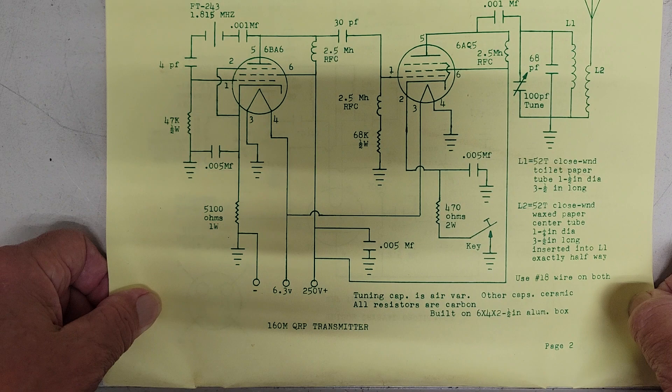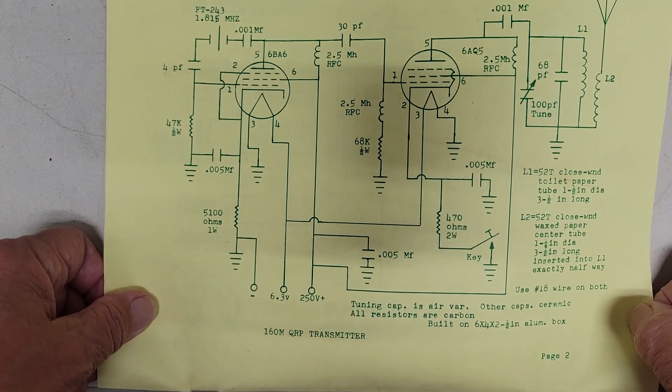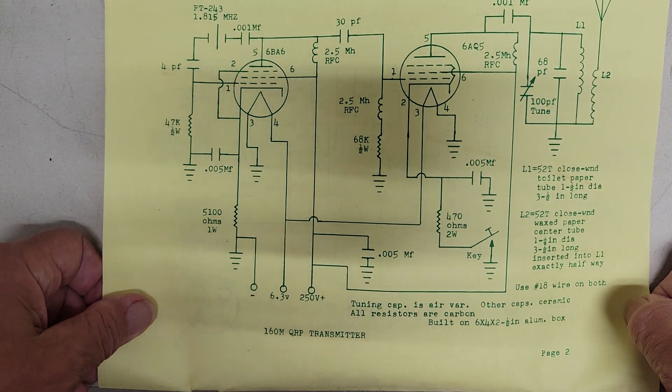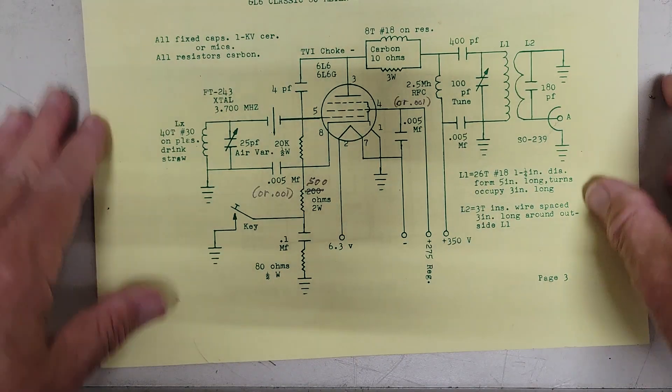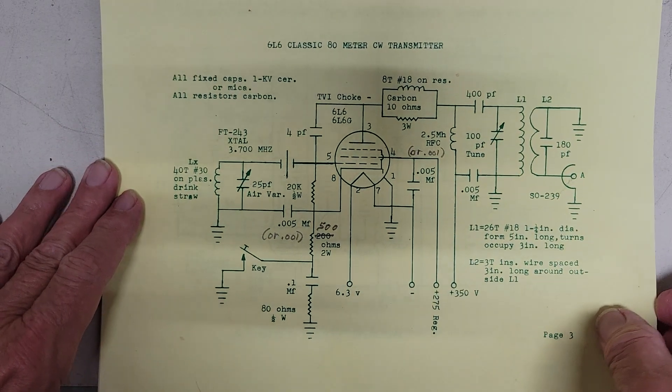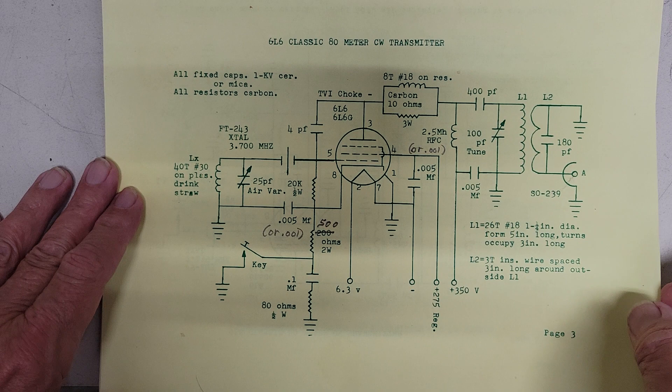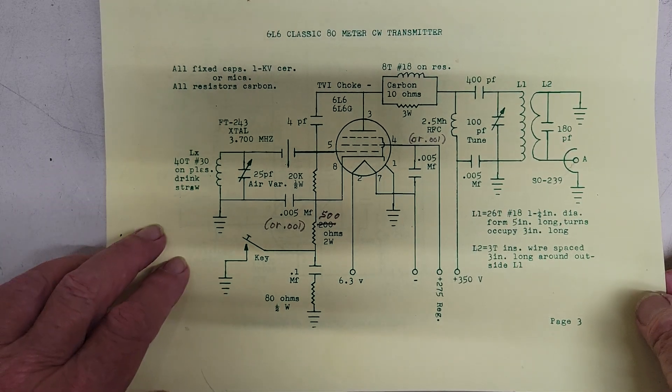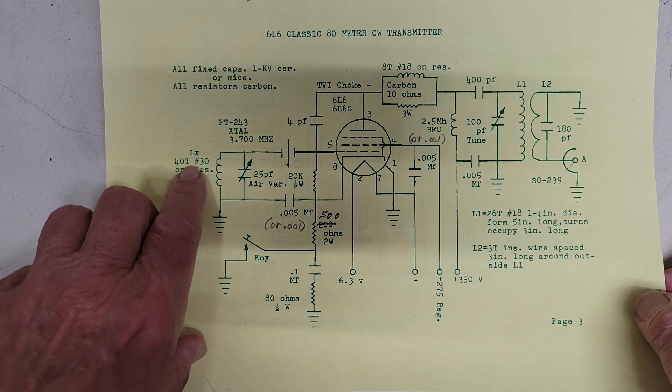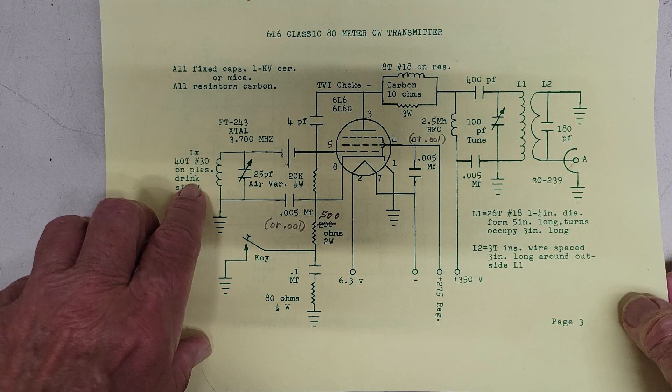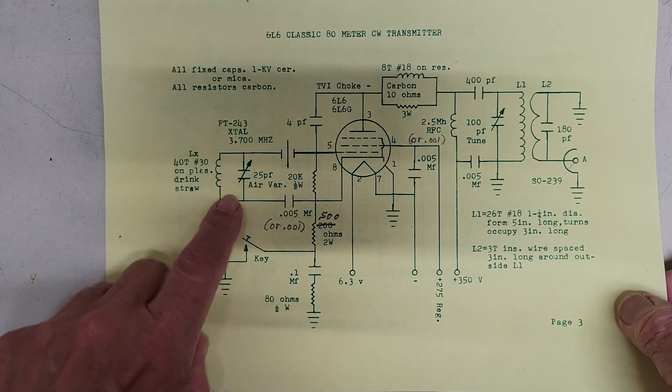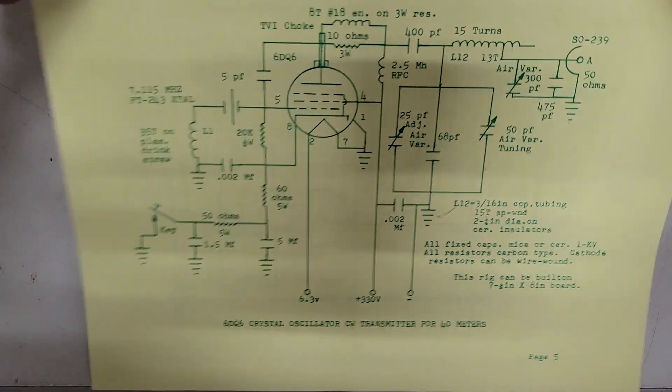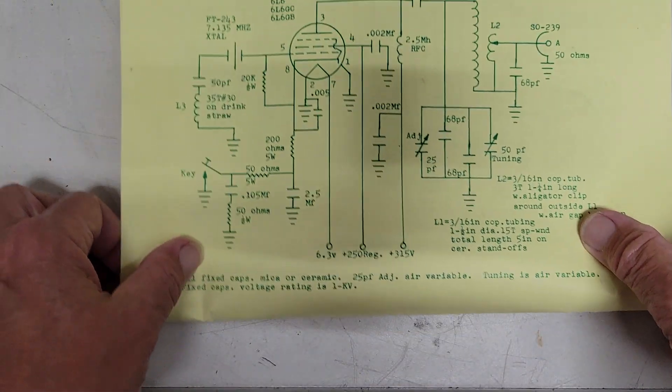Here we have a 160 transmitter using a 6BA6 and a 6AQ5 tube. And here we have a little 6L6 single tube CW transmitter. Check this out: about 40 turns of number 30 wire on a plastic drinking straw. He designed these to be made from parts that you can find easily, like ham fist.